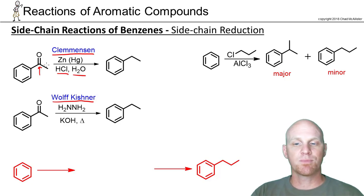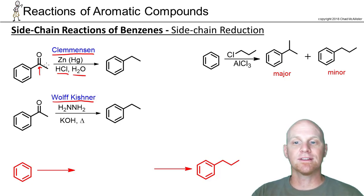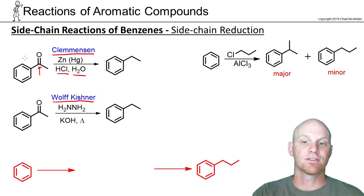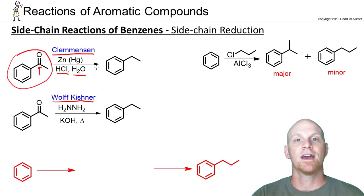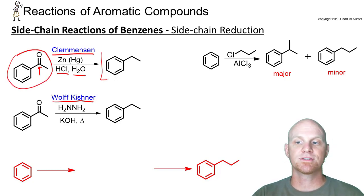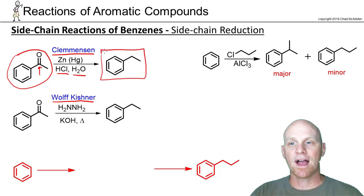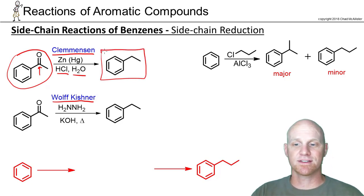This is important because with a Friedel-Crafts acylation, you get a ketone in your product, and then you can completely reduce it to get the corresponding alkane. So this is an important reaction for synthesis in this chapter.